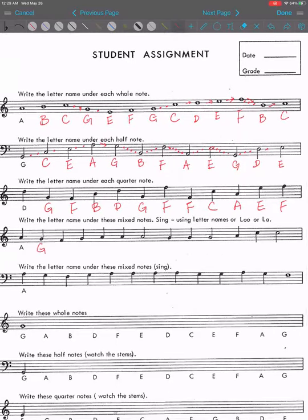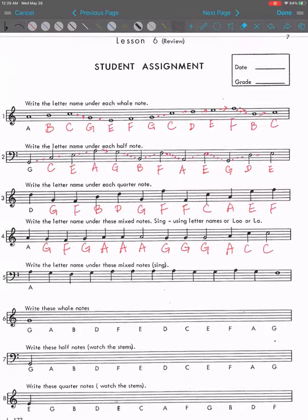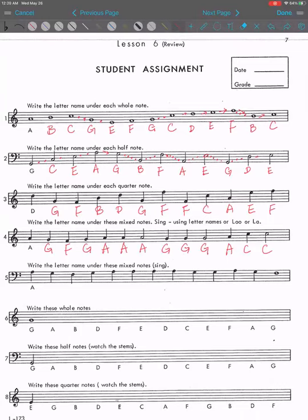A, G, F, G, A, A, A, G, G, G, G, A, C, C. On this one, it actually asks you to write a letter name on these mixed notes, sing, and use letter names or Lu or La. So when we have quarter notes, in the setting of four four, it should be counted as one beat. And a half note will be counted as two beats. So the song here is actually Mary Had a Little Lamb. It's A, G, F, G, A, A, A, G, G, G, A, C, C. All right.